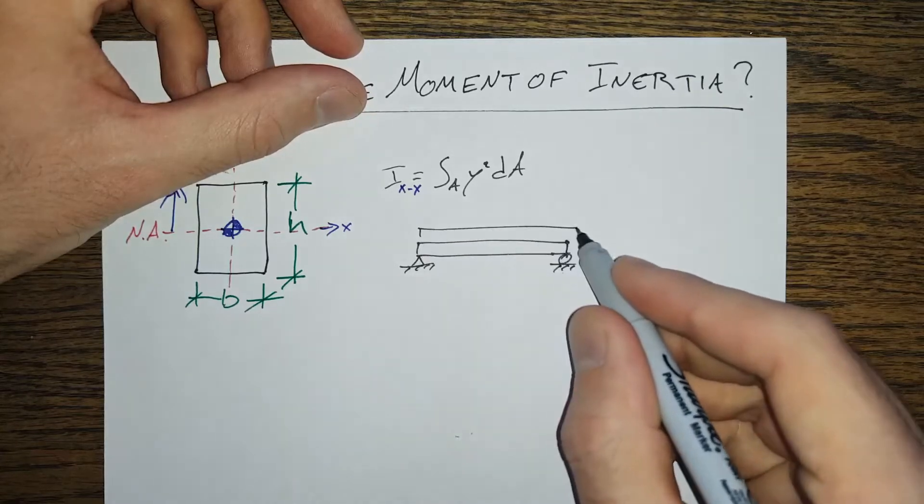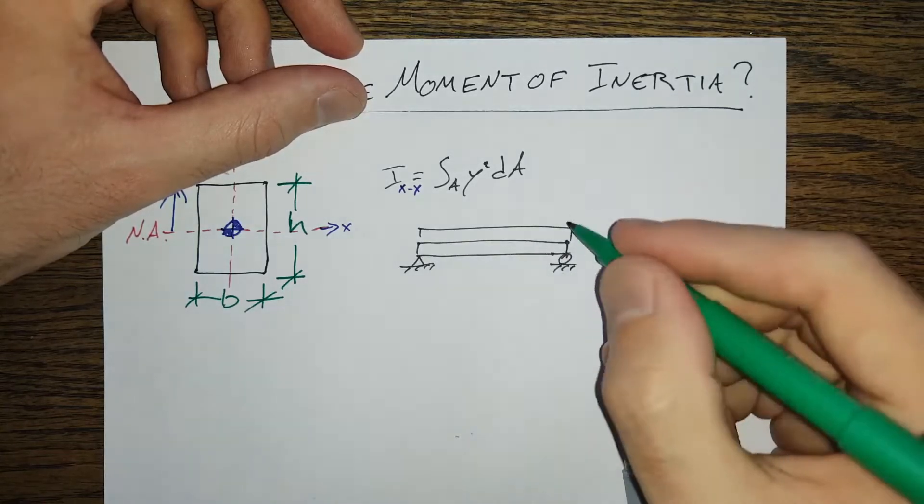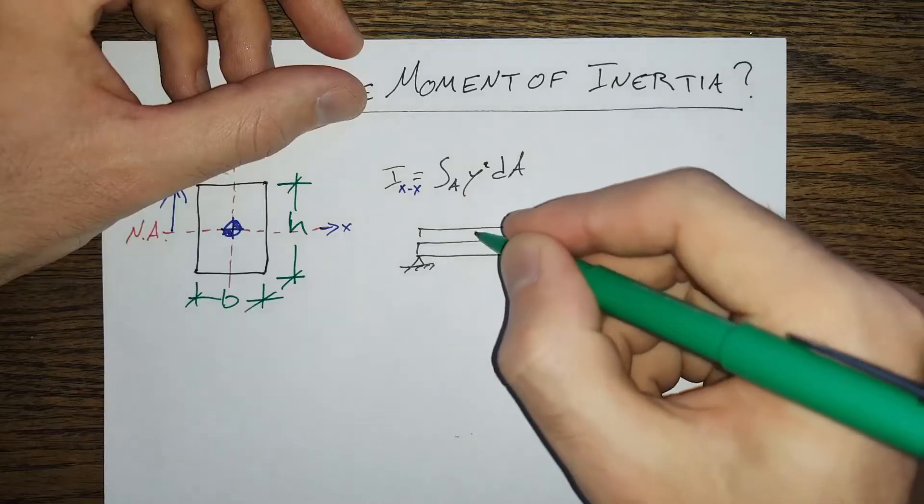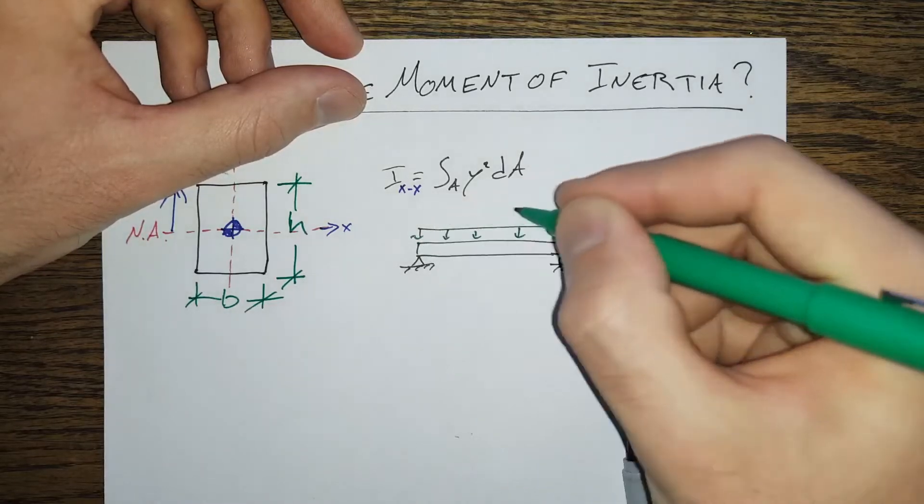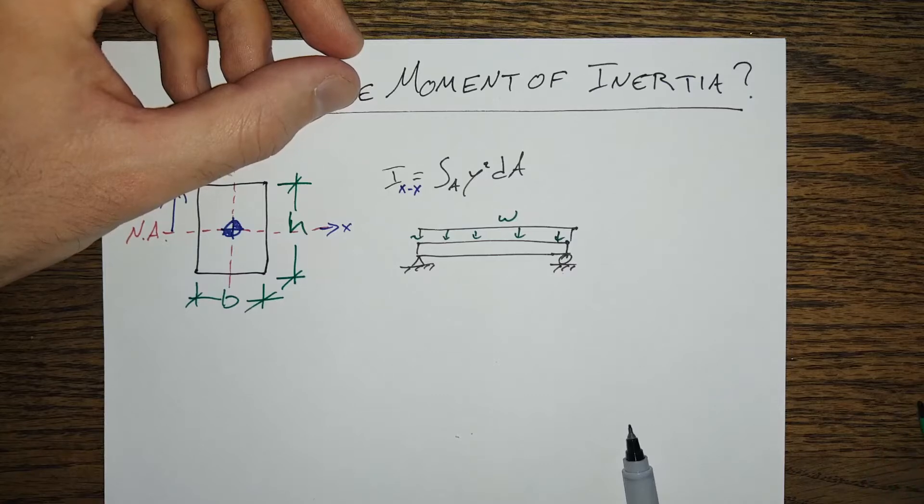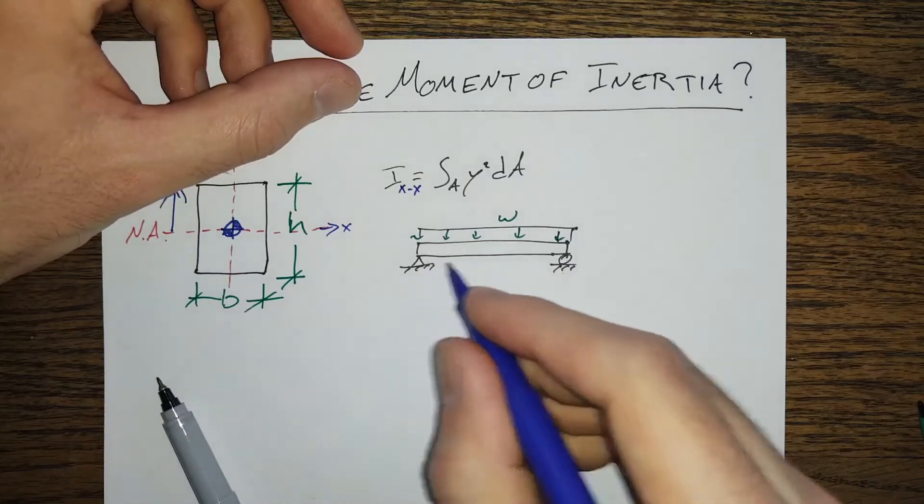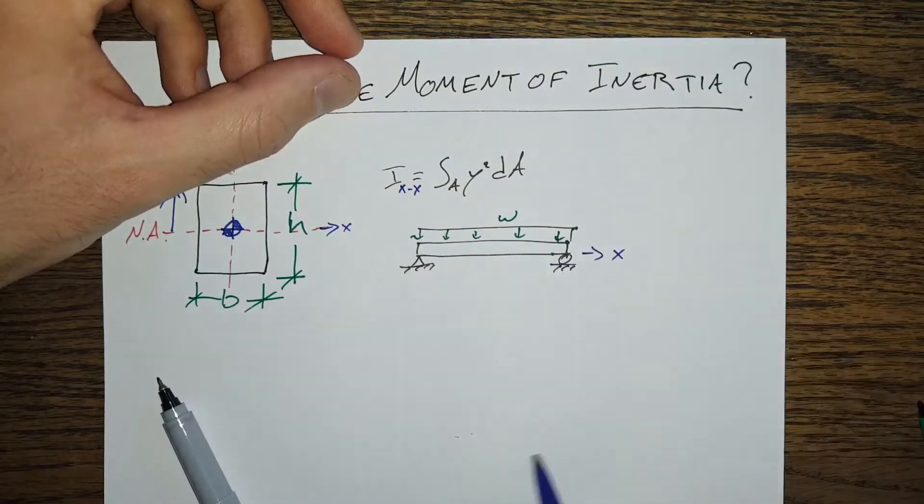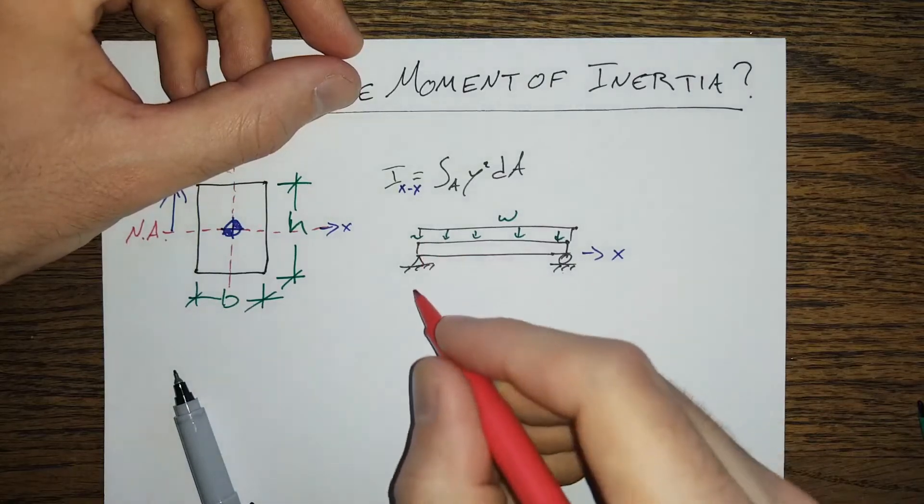If we take this and apply a uniform distributed load w to this beam, and this beam has a coordinate system as well, this beam has a length of L.